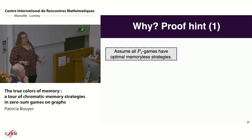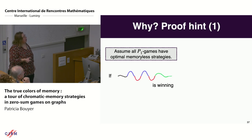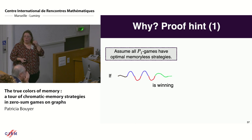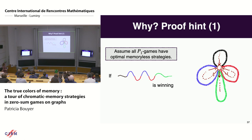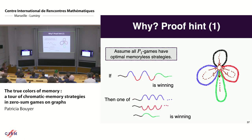Zielonka showed that being memoryless determined in finite arenas is equivalent to W and its complement both being monotone and selective. For the proof sketch: assuming all one-player games have optimal memoryless strategies, take a complex winning path and build a game arena encoding its parts. Since we are memoryless determined, there is a best choice among blue, red, or green, meaning one of them is winning—so W is selective.